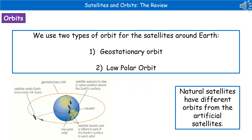In order to keep those satellites where we expect them to be, they have to be in what's called orbit. We've got two types of orbit that we could use: a geostationary orbit or a low polar orbit. Natural satellites do have a different orbit from the artificial ones, but we're going to focus on these two artificial satellite orbits. If you look at the bottom left, you can see a little diagram that summarizes the difference between them.